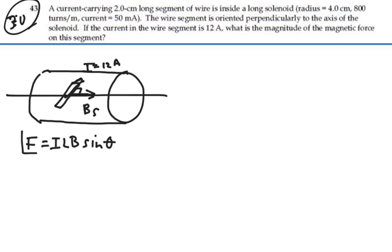our result from chapter 29. So that's the force on a wire segment. So we need to find what the magnetic field is inside the solenoid.